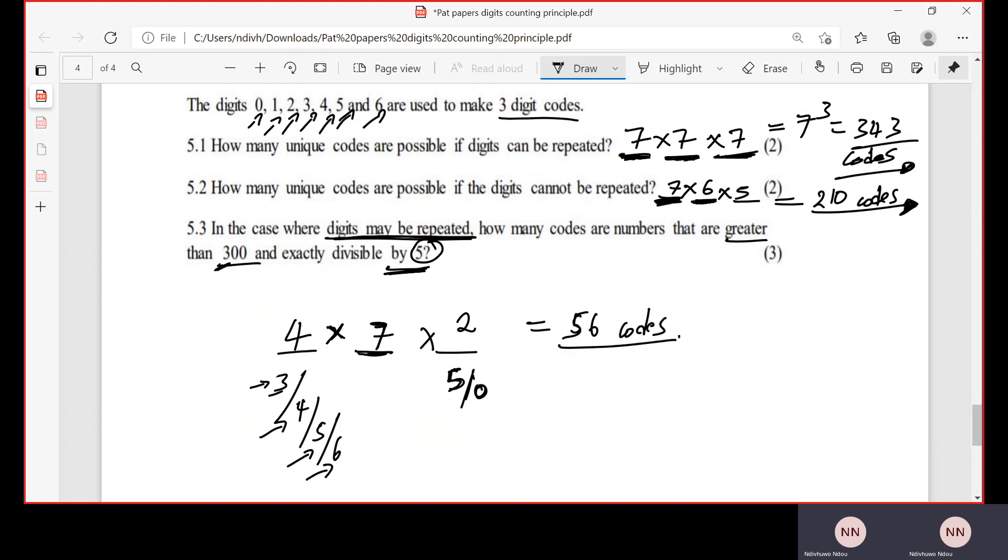than 300, right? So if you check, if we start with 3 here and we can choose any of the seven choices in the middle, if you put 0 here and 0 here, you find that there will be a code that is exactly 300. And they don't want a code that is exactly 300; they want the ones that are greater than 300. So from the 56 codes, we are including this one that is 300, so we must remove it to be left with only those that will be greater than 300. We're going to subtract 1 code, and the total number of codes will be 55 codes.